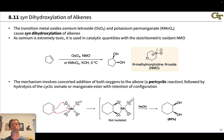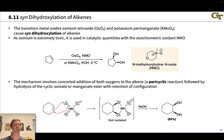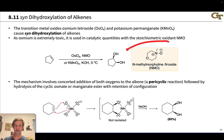If we want syn-dihydroxylation — with the two new hydroxyl groups on the same side of the alkene — we need a fundamentally different approach. This approach uses osmium tetroxide (OsO4) or potassium permanganate, metallic oxyanions that can deliver two oxygens at once from the same side of the alkene to both alkene carbons. OsO4 is fantastic for this, but osmium is extremely toxic, so it's most commonly used in catalytic quantities in combination with N-methylmorpholine N-oxide (NMO), an oxidant that continuously regenerates the OsO4.